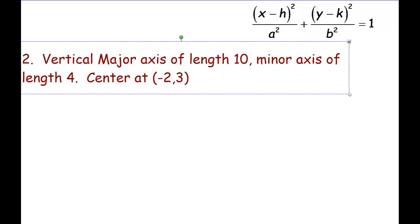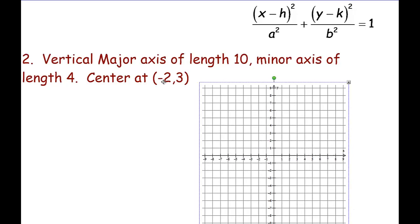So let's look at a second example. Here we have vertical major axis of length 10, minor axis of length 4, and then center at negative 2, 3. So let's take a look. Our center we're given this time, so at negative 2 positive 3 is going to be our center, and it tells us a vertical major axis of length 10.